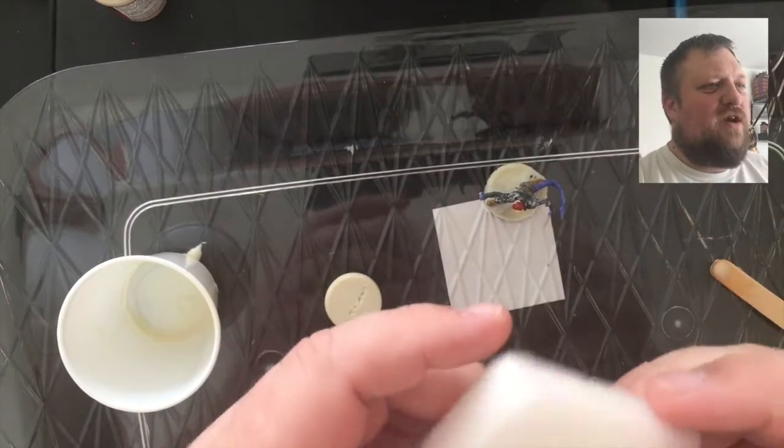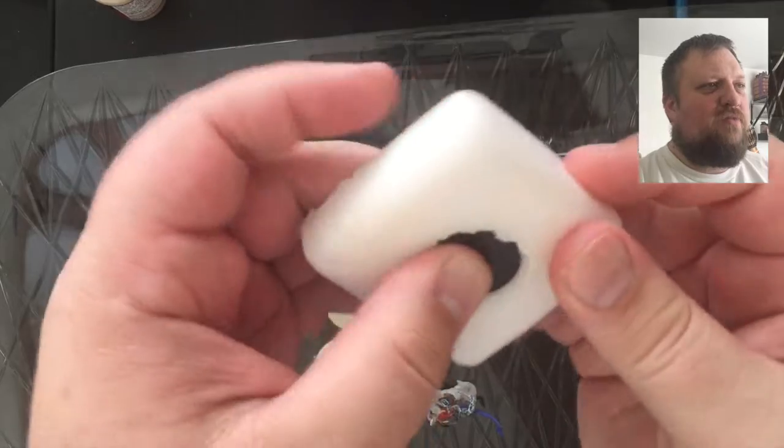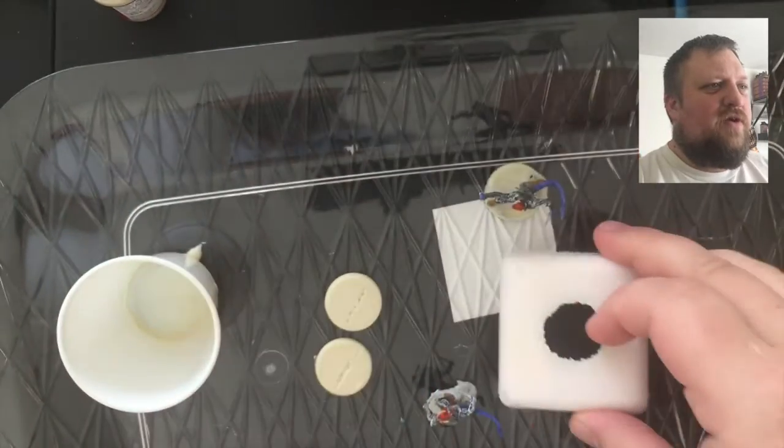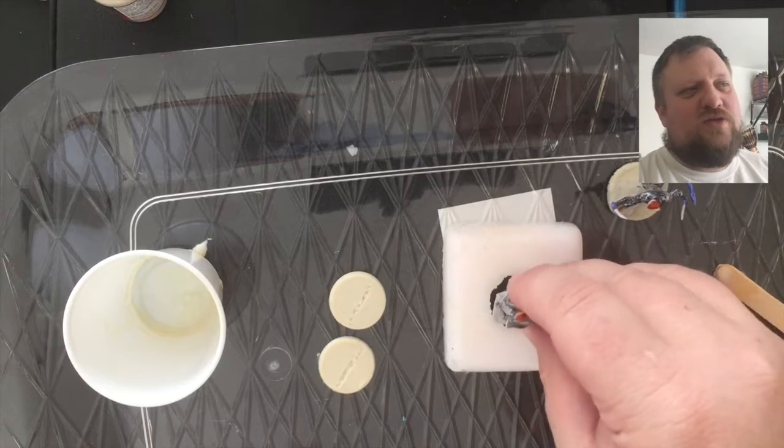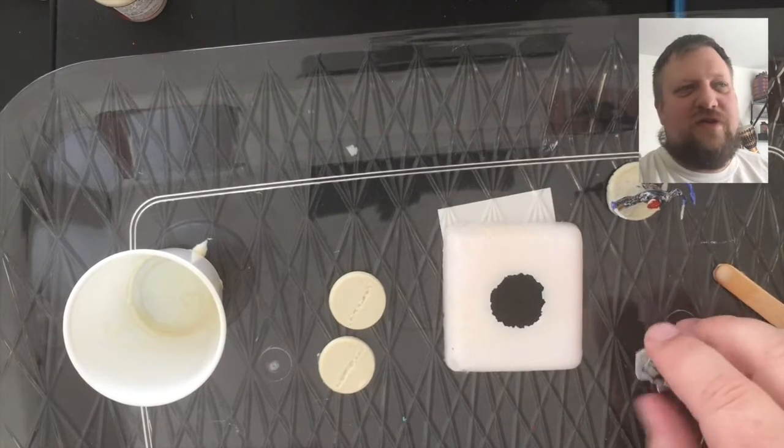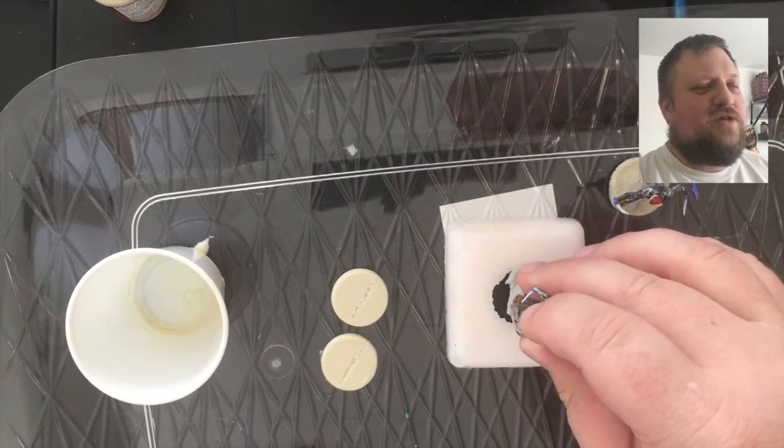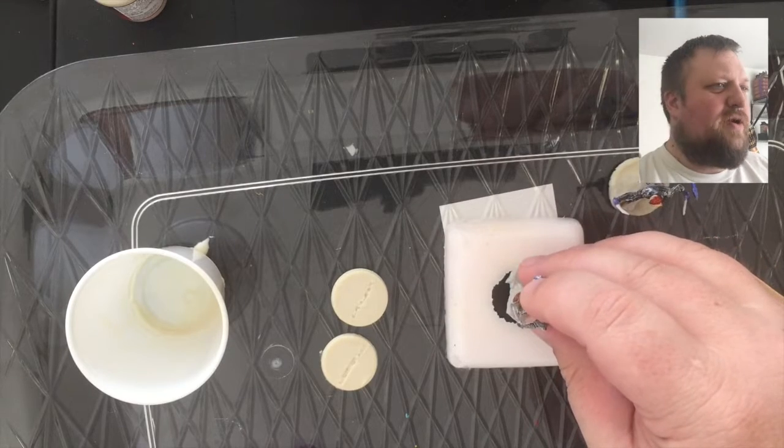So you can see there with the softer mold it really just kind of pops right in for that one. I've got the text facing up. I also like it because then when you have it face down on the table it's a smooth even surface at the bottom of the base.